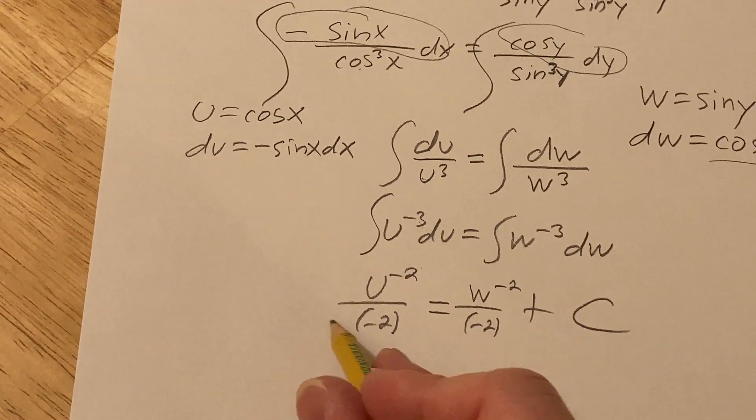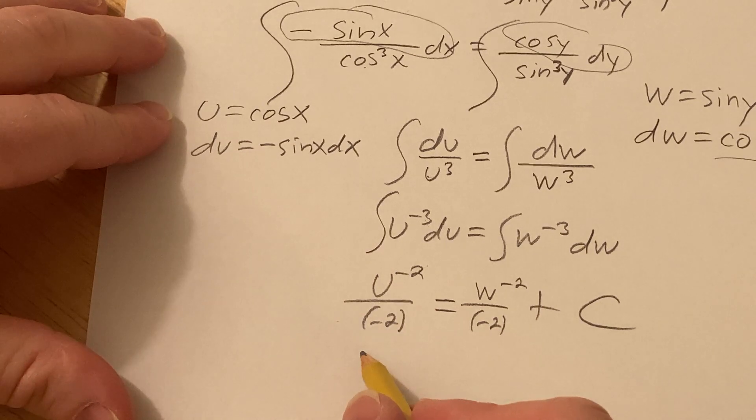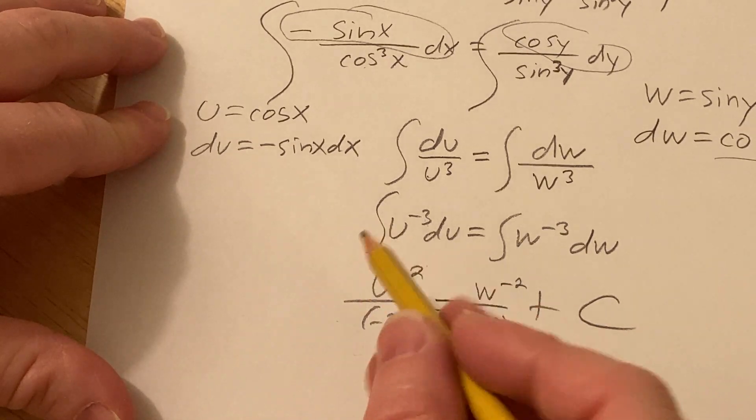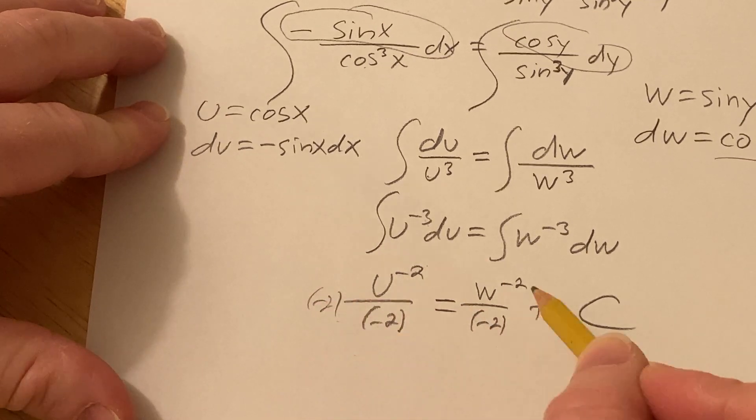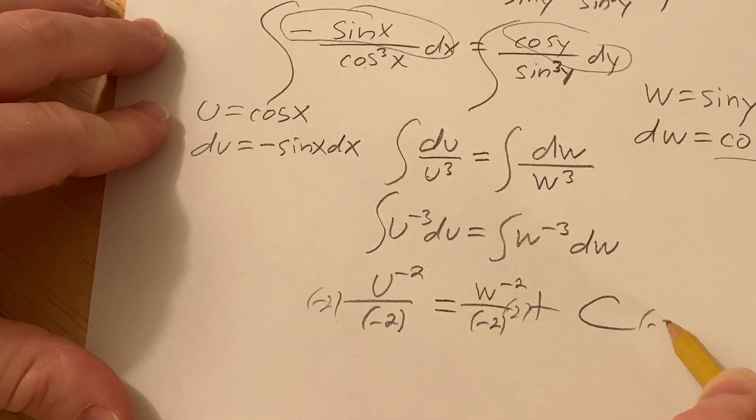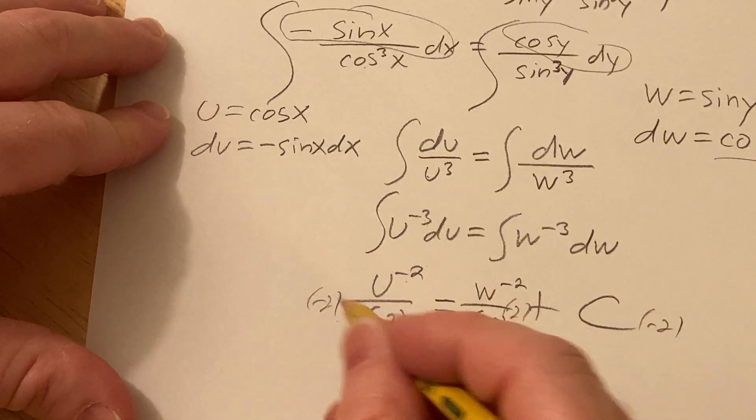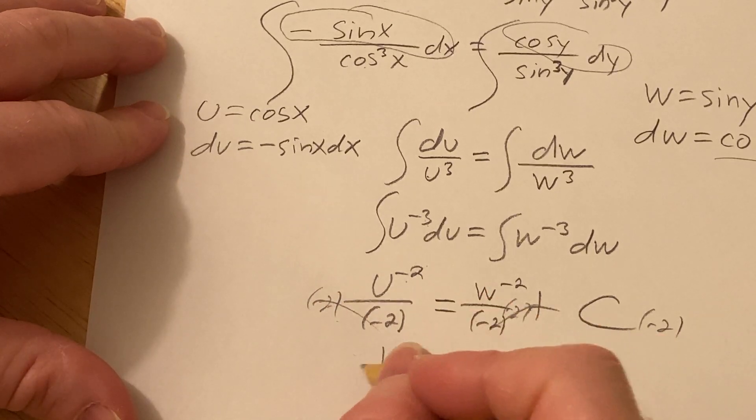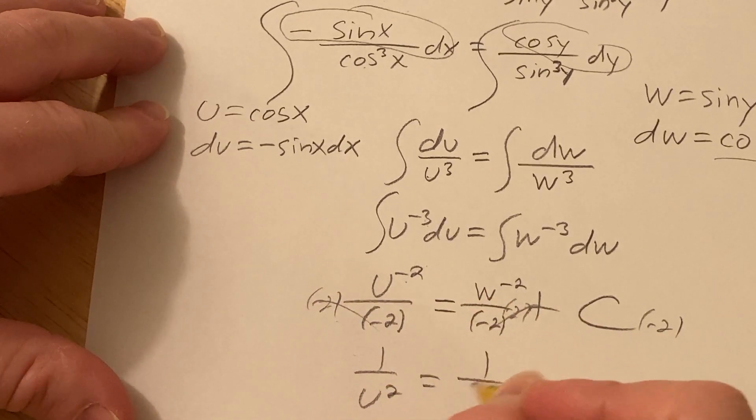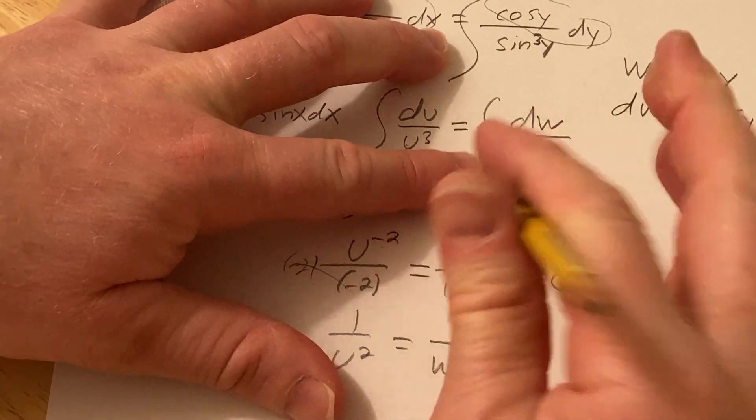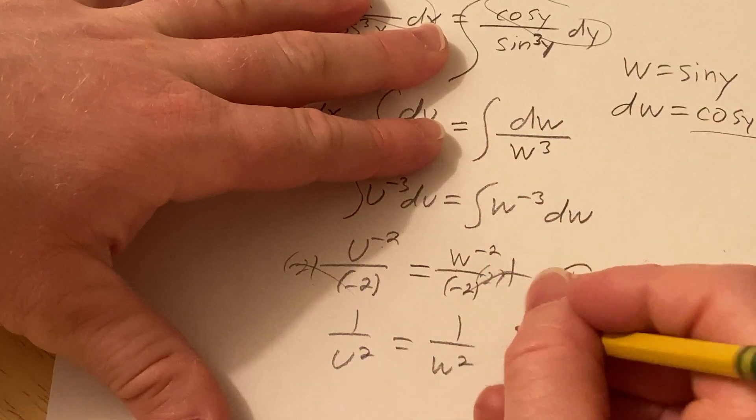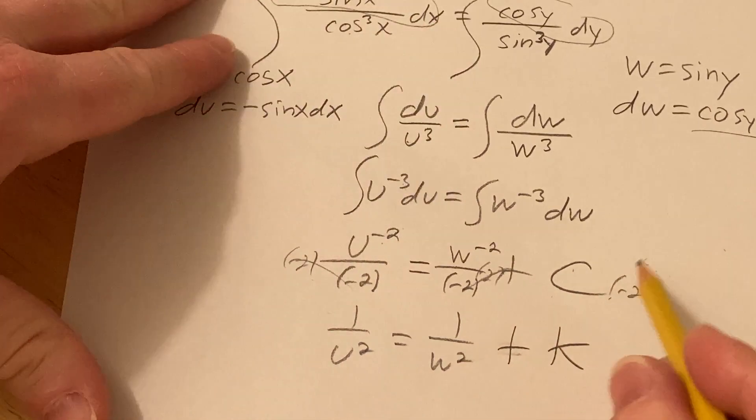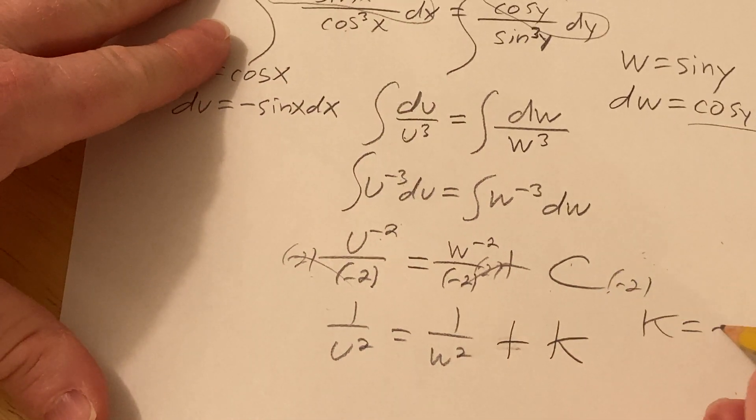All right, so I'm going to put these outside and write them as fractions. Or you know what? We can multiply everything by negative 2, let's do that. Just if you multiply this by negative 2, put a negative 2 here, put a negative 2 here, and bring these down, get 1 over u squared equals 1 over w squared, whoops, now put an equals there, and then minus 2c, let's call that k. So you just set k equal to minus 2c, right?